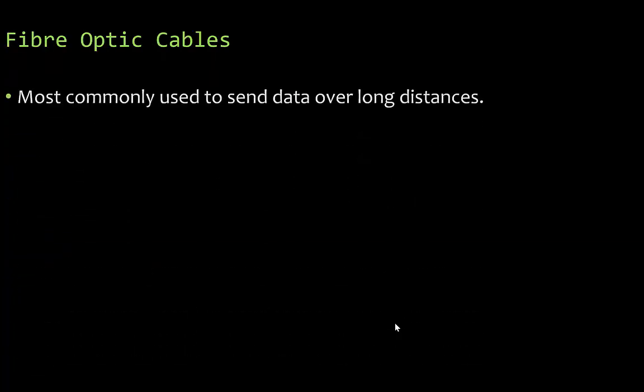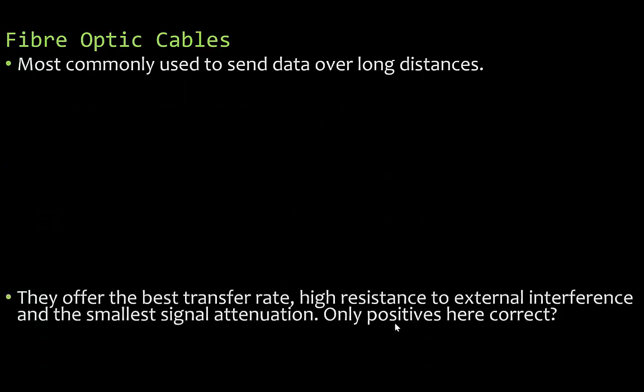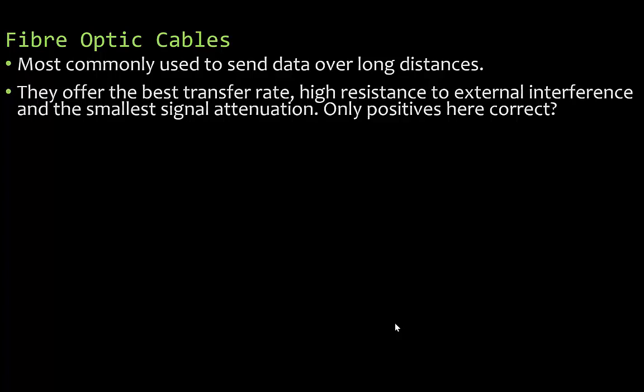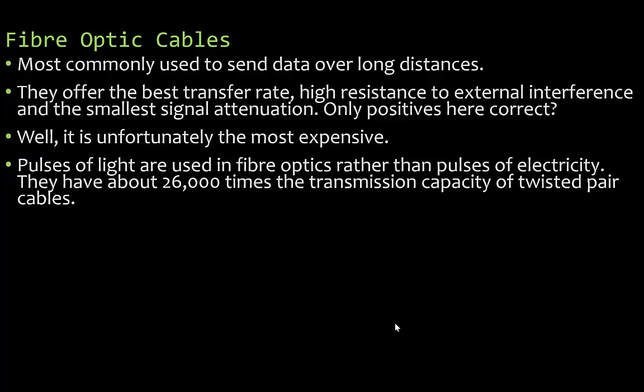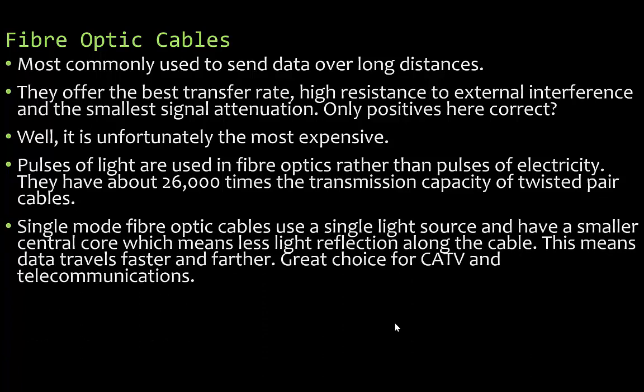The third type are fibre optic cables, most commonly used to send data over very long distances. They offer the best transfer rate, high resistance to external interference, and the smallest signal attenuation. The downside is they are unfortunately the most expensive. Pulses of light are used rather than pulses of electricity. Fibre optic cables have about 26,000 times the transmission capacity of twisted pair cables, compared to coaxial which gives 80 times.